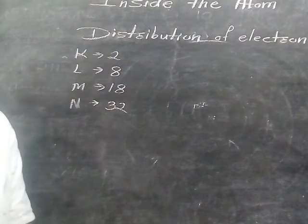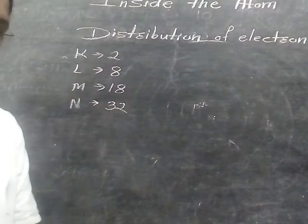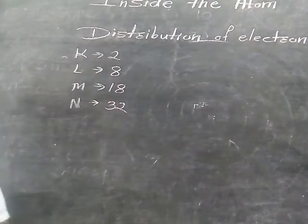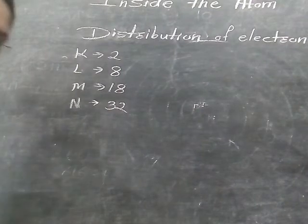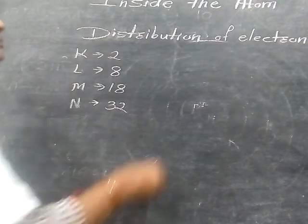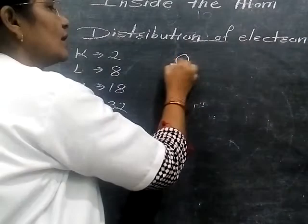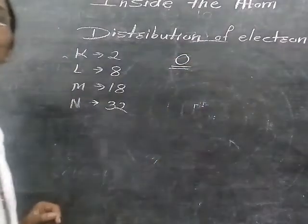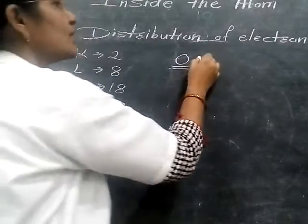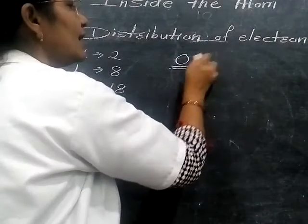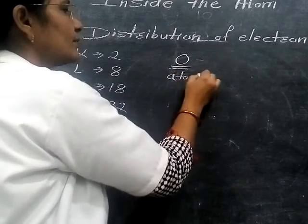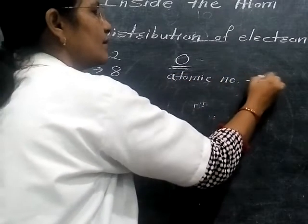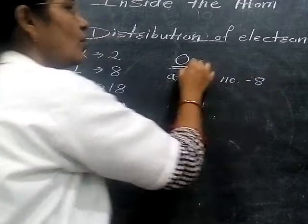Now let us take an example of how we can find out the electronic configuration. Let us take the example for oxygen. The atomic number of oxygen is 8.